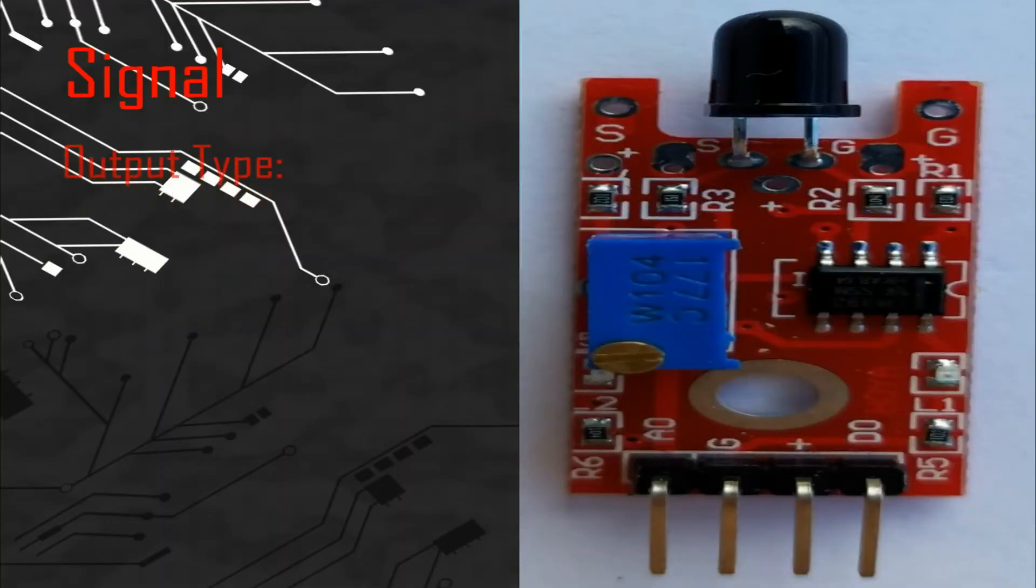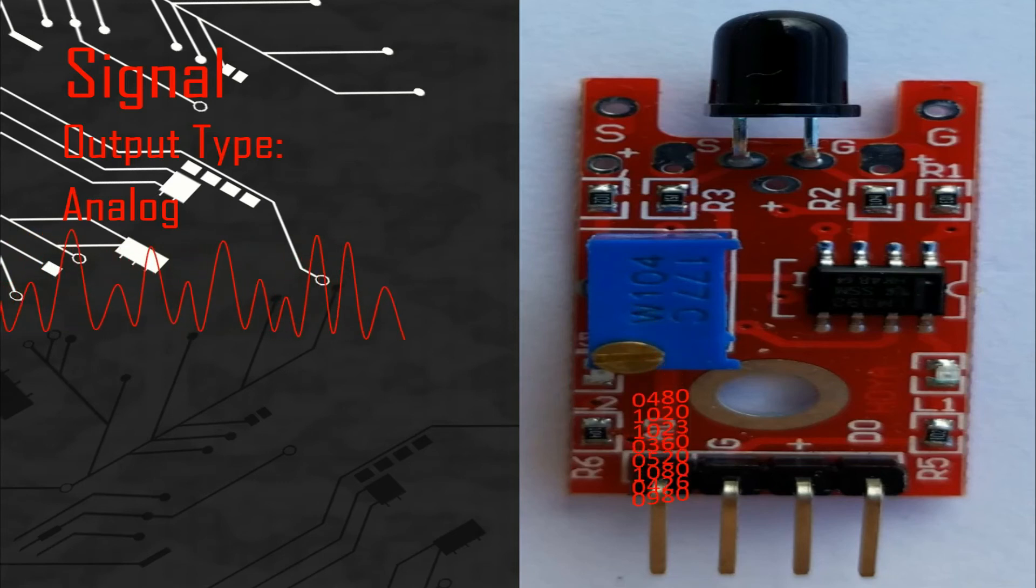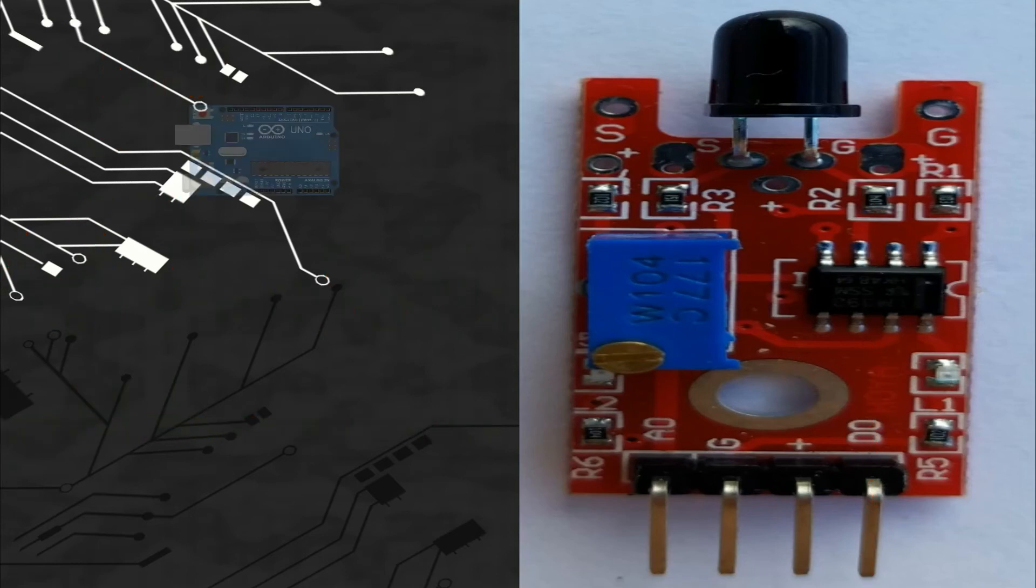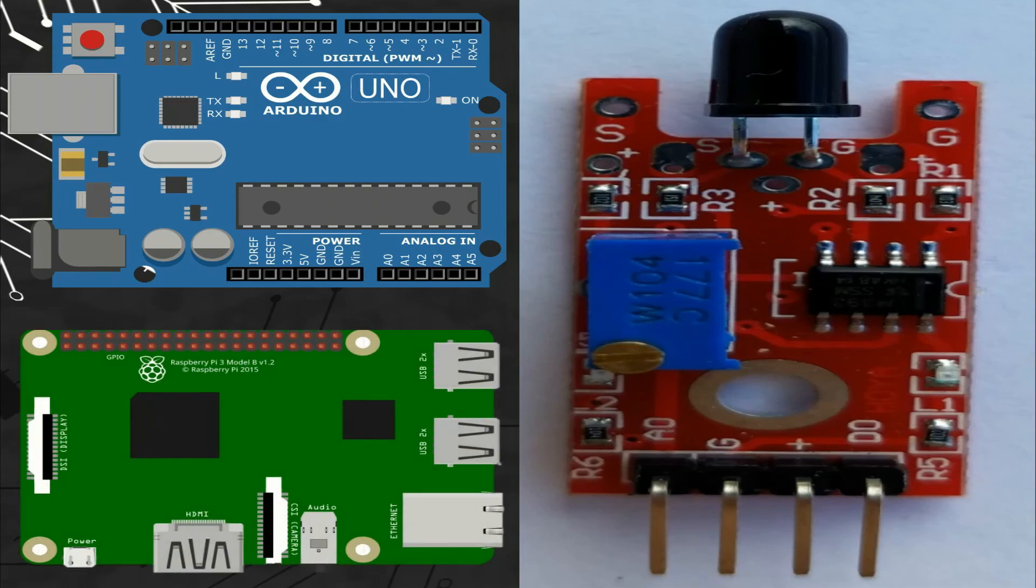So let's talk about the signal. This module gives two signals. We can connect the pin of the analog signal with any analog port, and the pin of the digital signal with any digital port of different microcontroller boards like Arduino or Raspberry Pi.